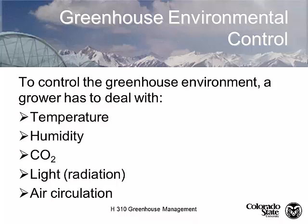One of the things that a greenhouse does — some people call the greenhouse technology 'controlled environment agriculture' — is to control the environment. We need to control the temperature, humidity, and carbon dioxide levels. We can add supplemental radiation, extra light, or shade, and we can control the air circulation. These are some of the things we need to put together in an integrated system.